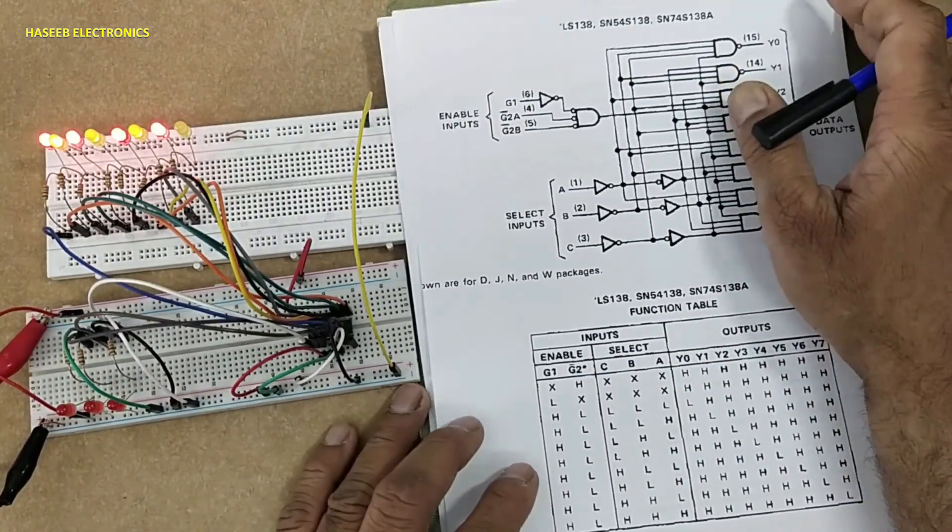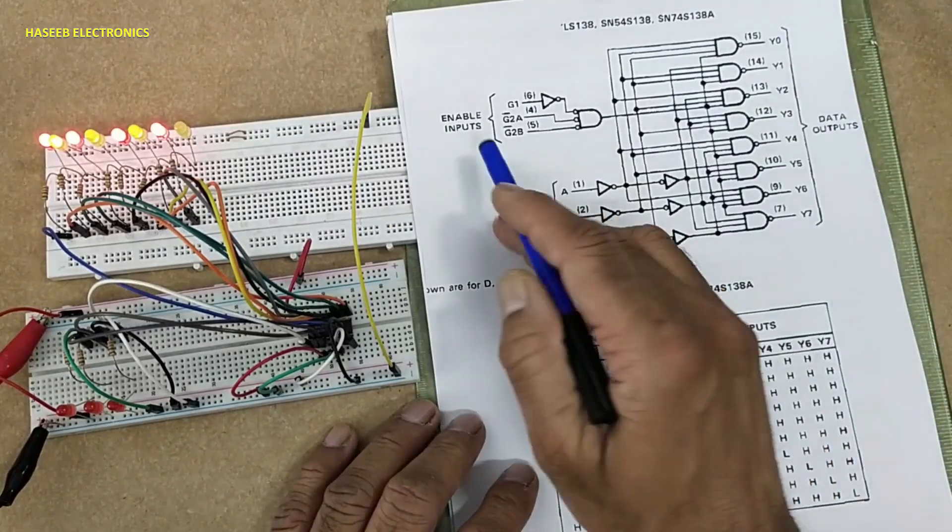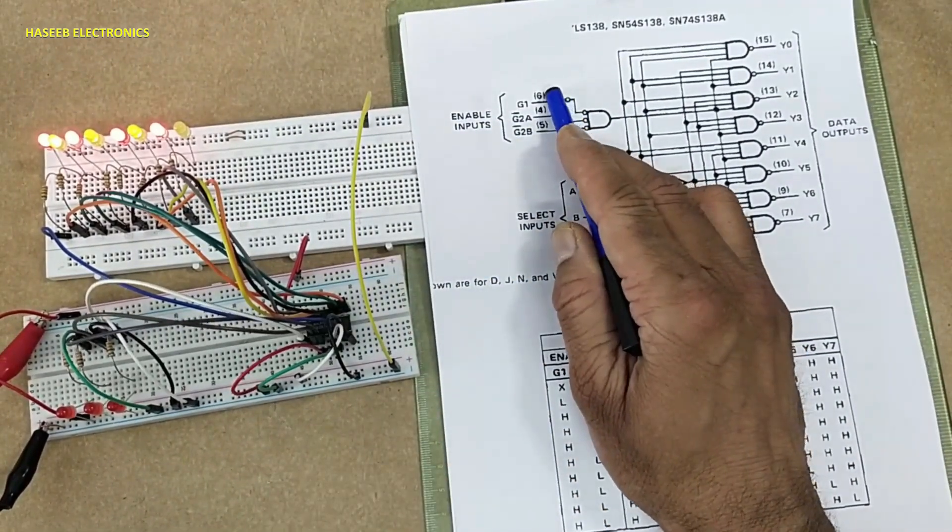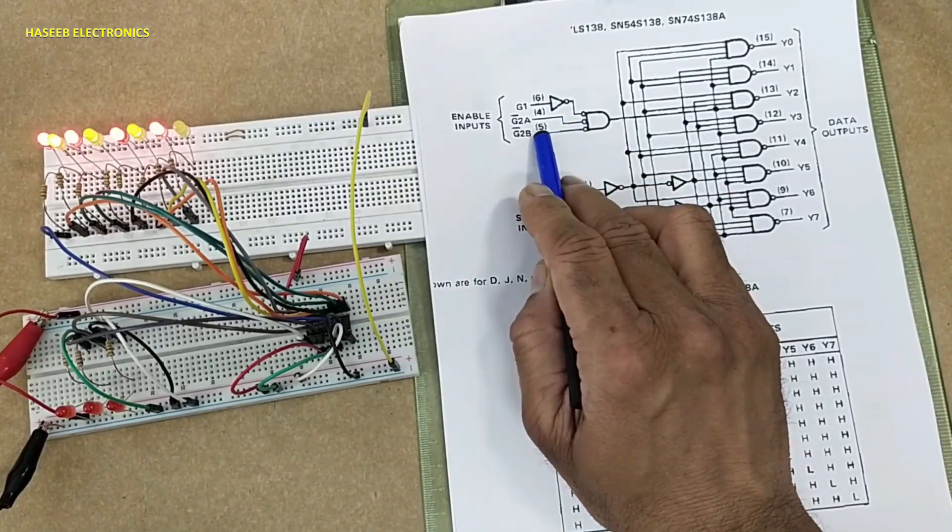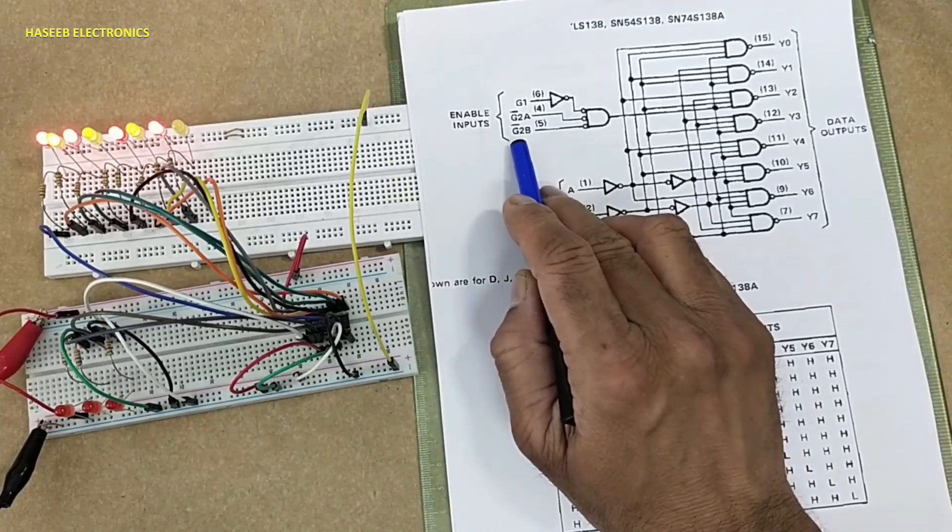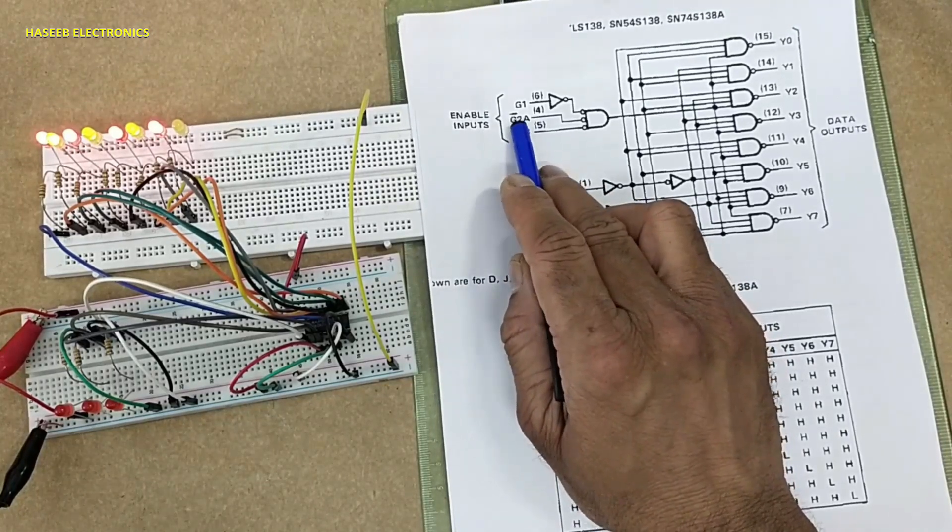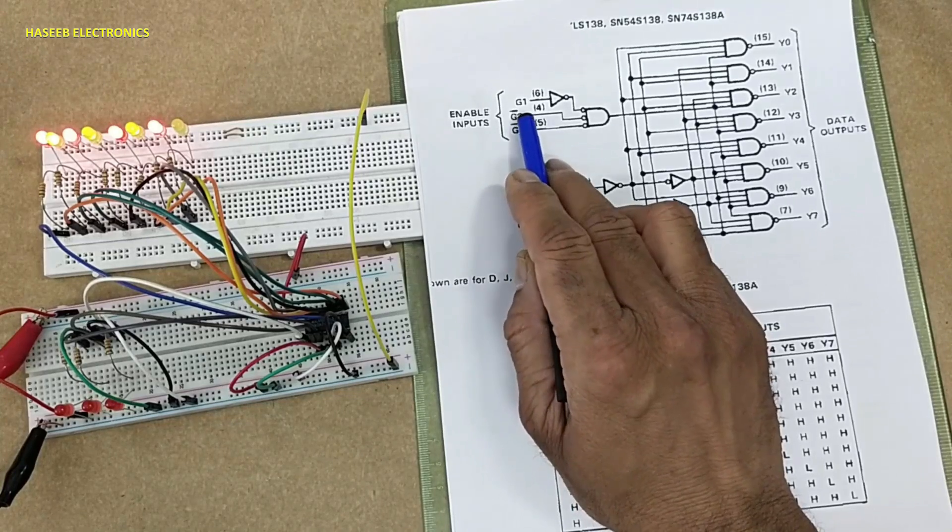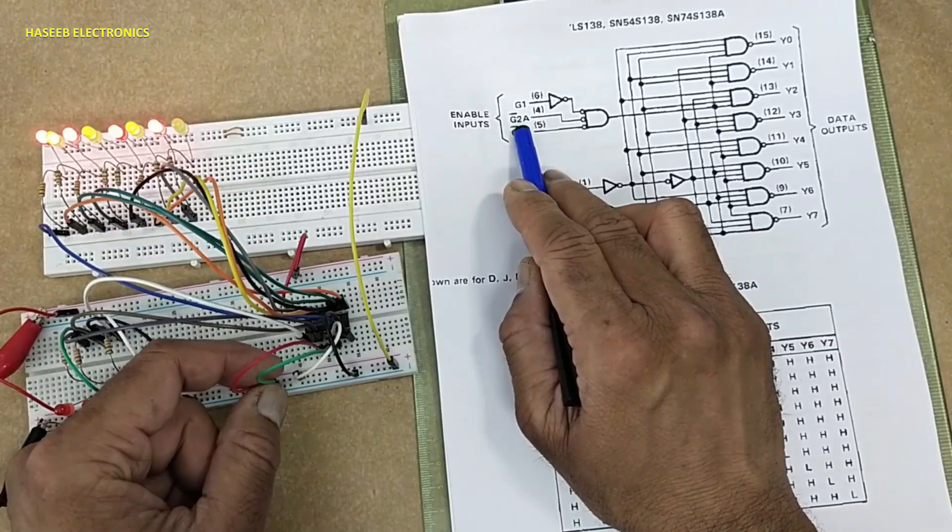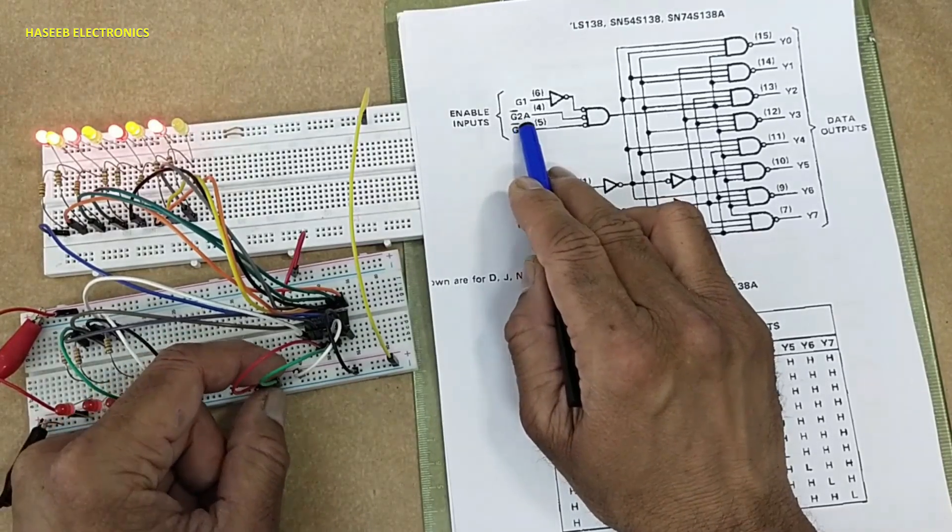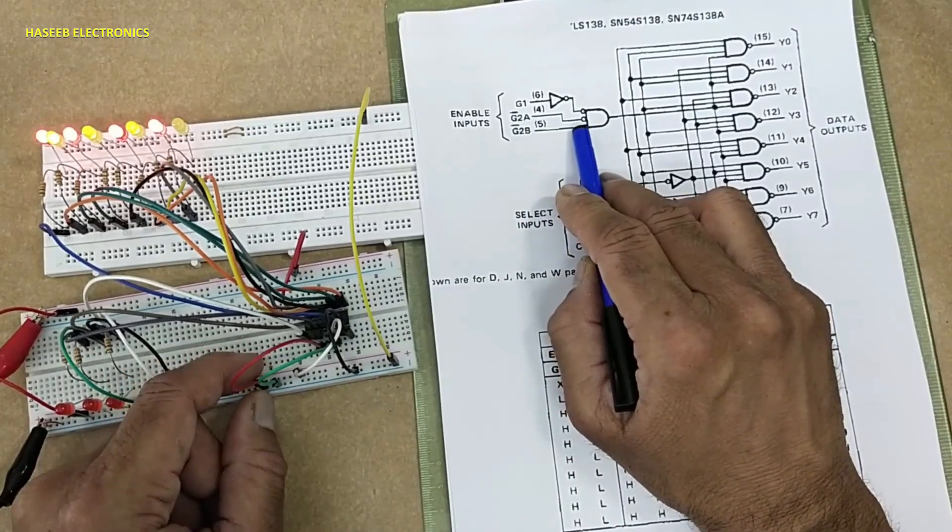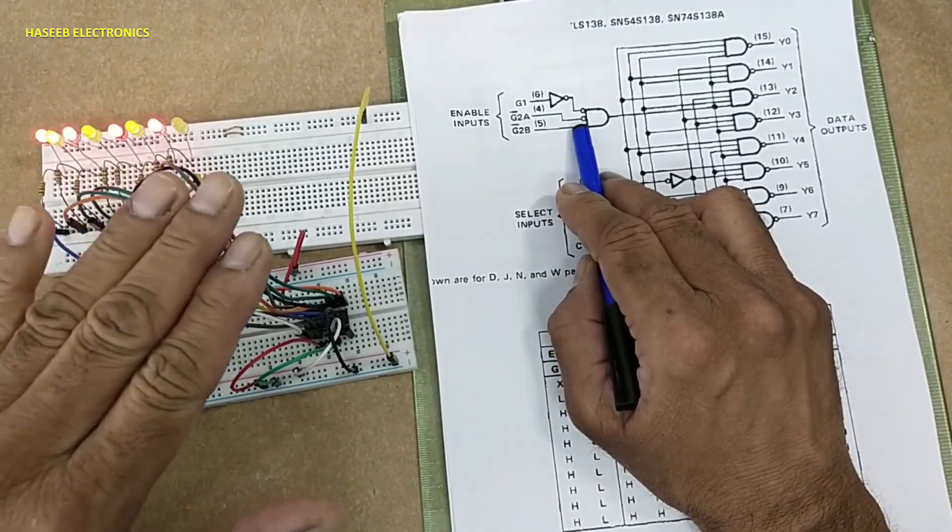If you see its logic diagram, here are the enable pins: pin numbers six, four, and five. Pin four and five are G2 bar, which are active low inputs. That means these two pins must be connected to ground, which I connected to ground. If any of these pins becomes high, this IC will go into disabled state.